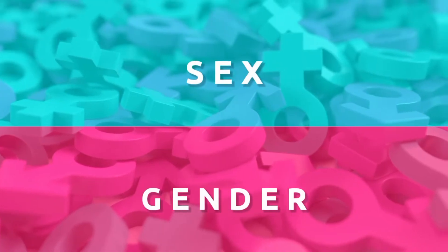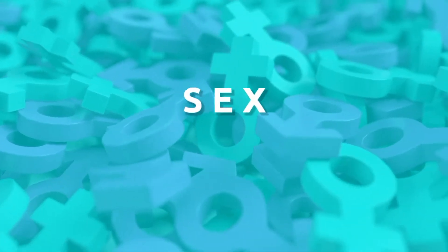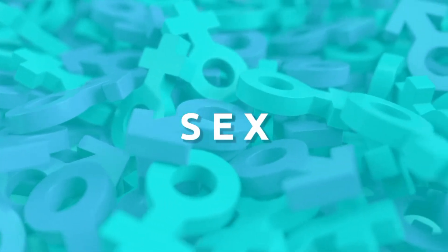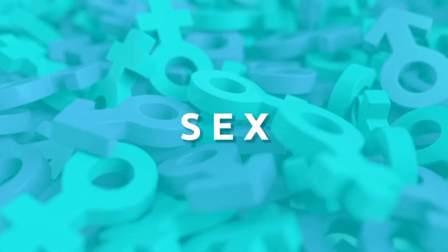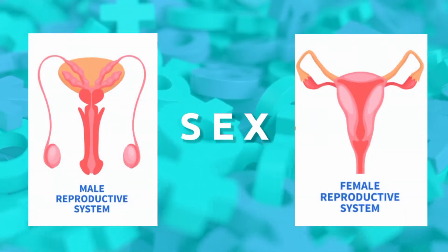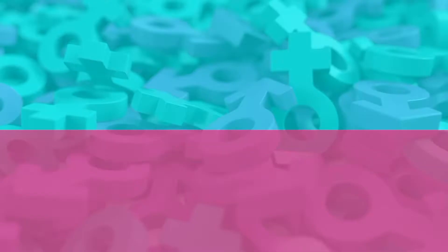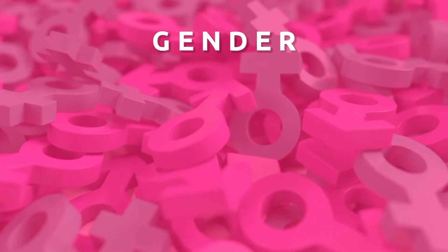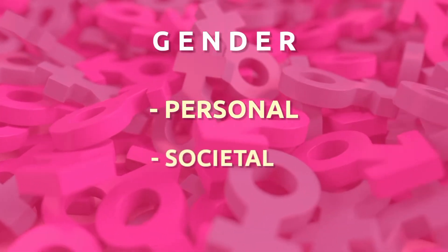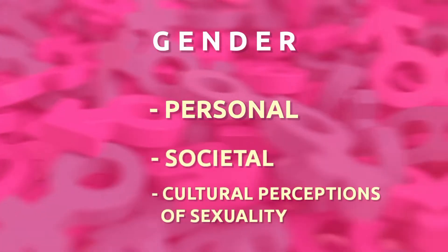The difference between sex and gender is that sex is a biological concept based on biological characteristics, such as the difference in genitalia in male and female. Gender, on the other hand, primarily deals with personal, societal, and cultural perceptions of sexuality.